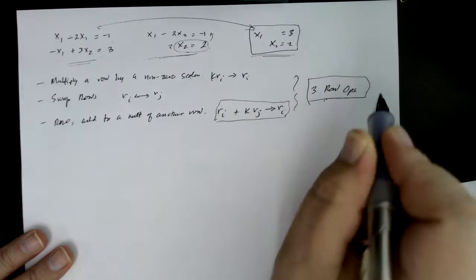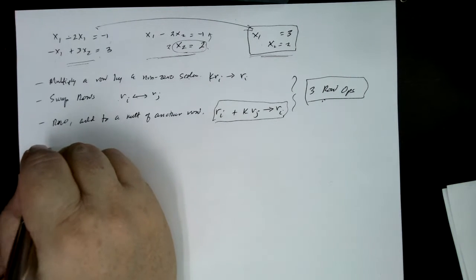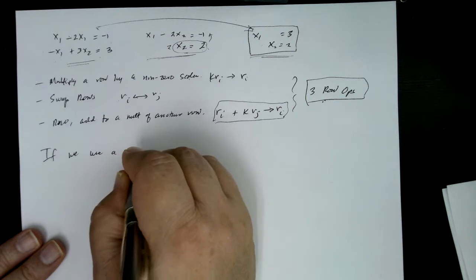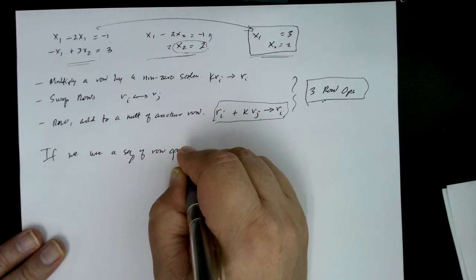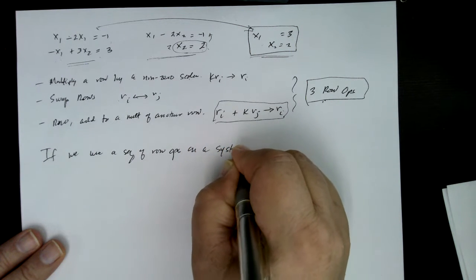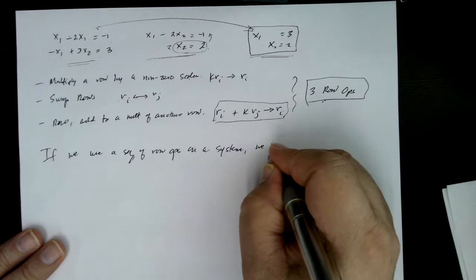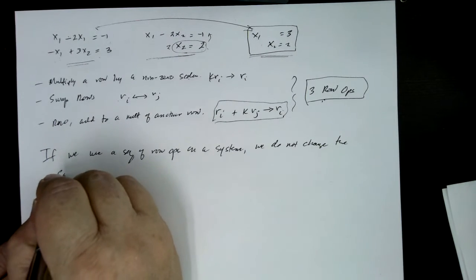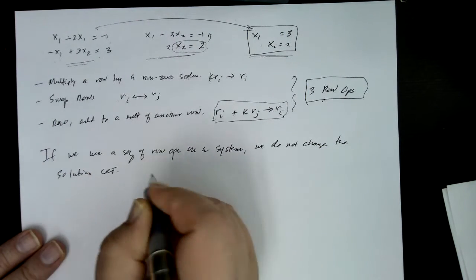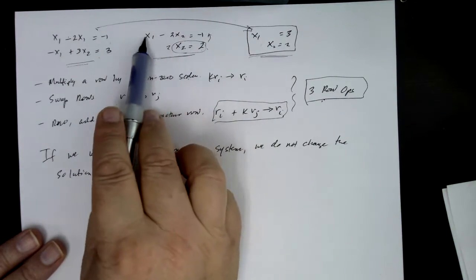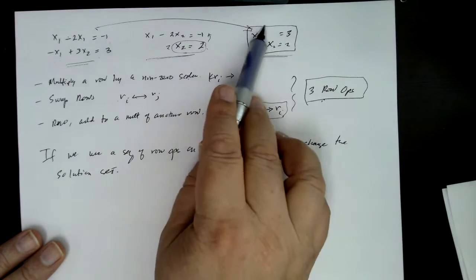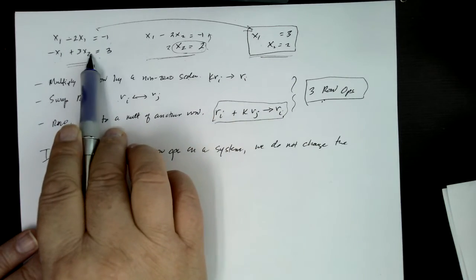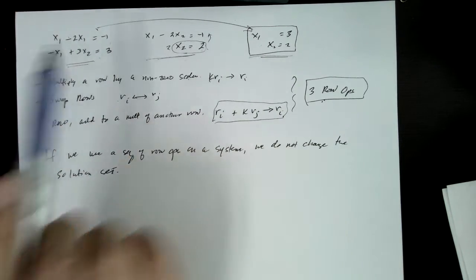And the importance of these operations is using, if a matrix, if we use a sequence of row operations on a system of equations we do not change the solution set. In other words, this system of equations is equivalent to this system of equations, and this system of equations is equivalent to that. So this equation, this system of equations is equivalent to the original, meaning that the solution set to the two are equal.